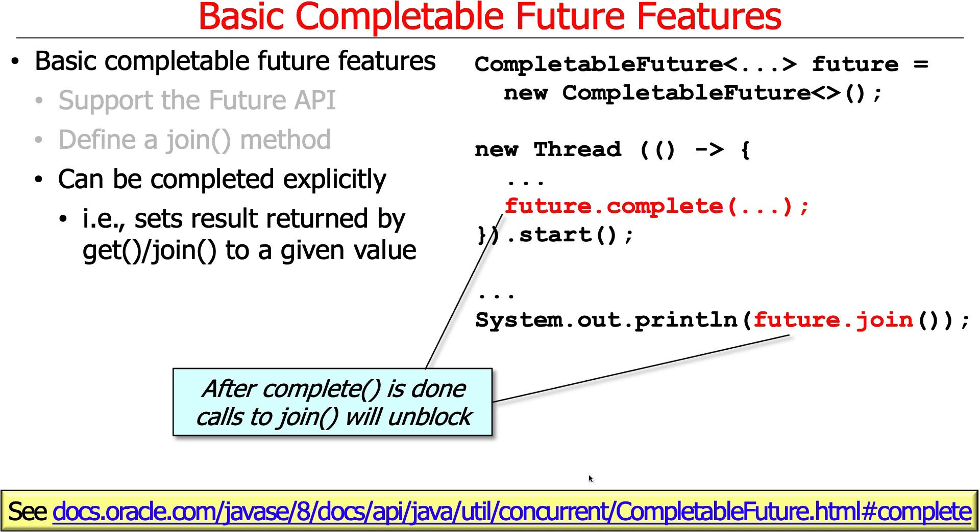Imagine you create a completable future that is not associated with any computation. Then you spawn a thread or you do supply async to get things to run asynchronously. After the asynchronous computation is finished, let's say you multiply big fractions together or something, you can then tell the future, I'm done. That will let anybody who's waiting for the future to be finished continue on at that point. So after complete is called, then calls to join will unblock or never have to block in the first place if you haven't called them yet.